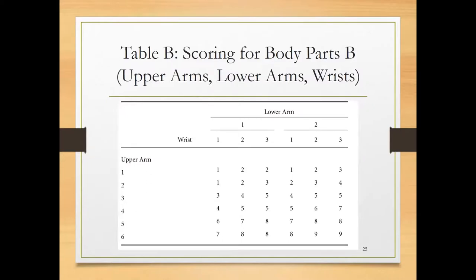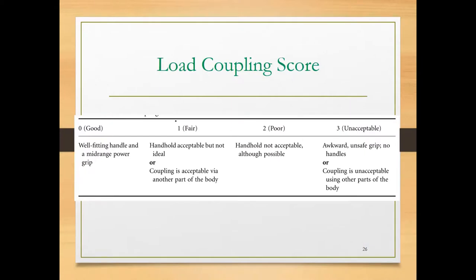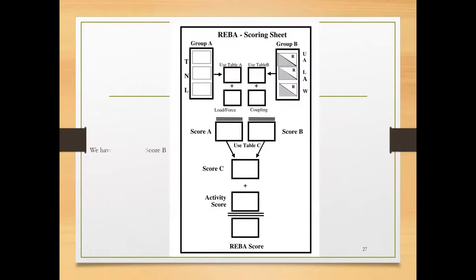We look up Table B using the scores for upper arm, lower arm, and wrist to reach a posture score for Group B. We then add the coupling score: if the grip is good, nothing is added; if coupling is fair, add 1; if poor, add 2; if unacceptable, add 3. Adding the coupling score to the Table B score gives Score B.